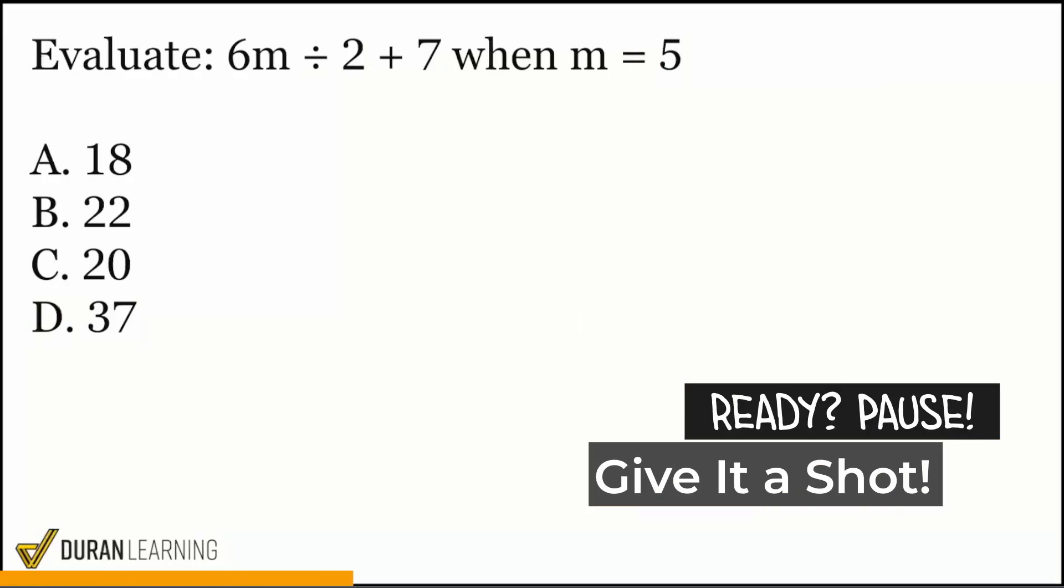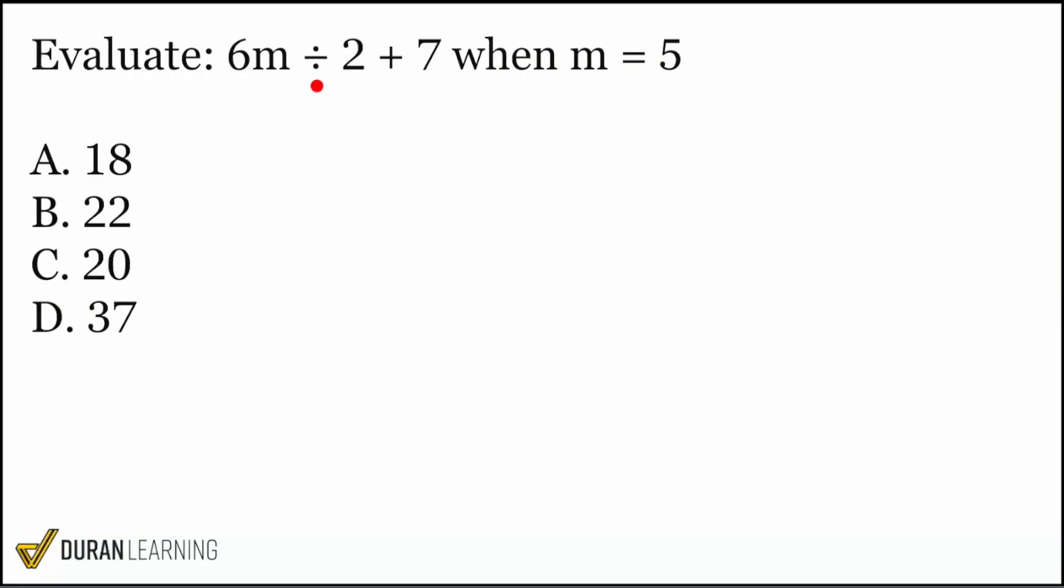Alright, here we have another question. And the question reads, evaluate the following expression, 6m divided by 2 plus 7 when m equals 5. So remember, everyone, all we have to do to solve these types of problems is first replace the variable here where it belongs. So we have 6m, so that'll be 6 and 5. And remember, that's going to be multiplication. So next we have divide by 2 plus 7. So from here, all we need to do is order of operations.